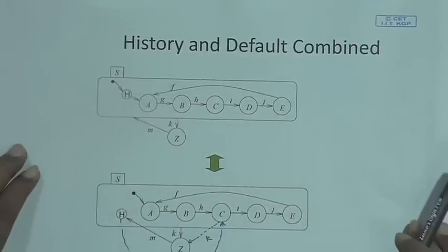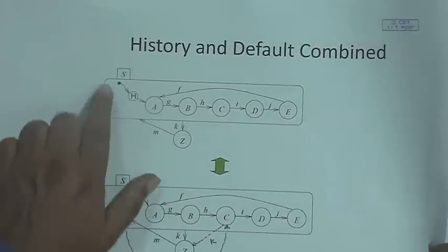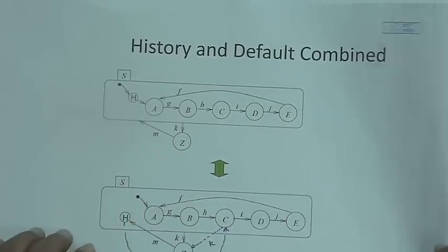Statechart is a graphical language, so whatever we are representing, we are representing in the form of diagrams, and the semantics must be very clearly understood. Because from here we will create an intermediate form which will be executed, and we want to see what results from our given specification. Here is what you can do by combining the history node and the default state.